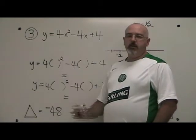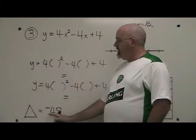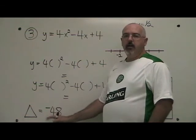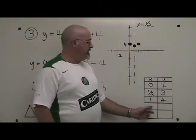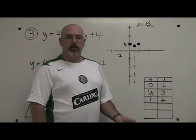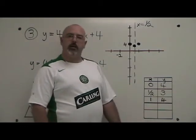Because there are no zeros in example 3 due to the negative delta, we have to fill in our table of values with two other points. I call them the extra points. How are we going to find our two extra points?